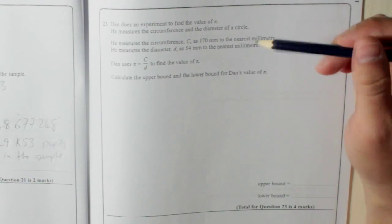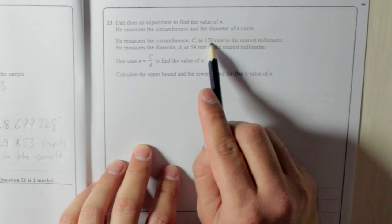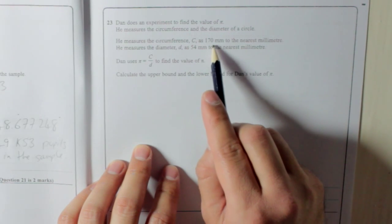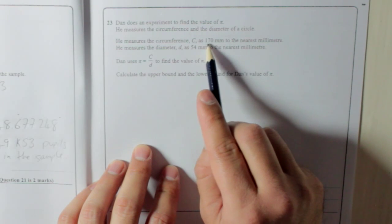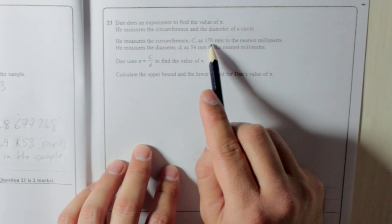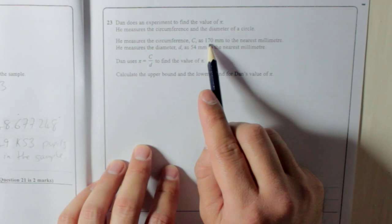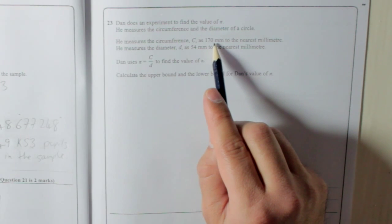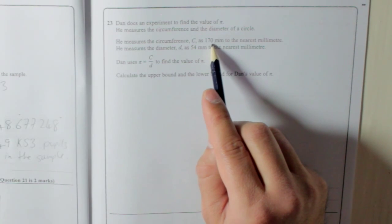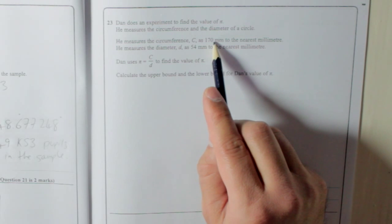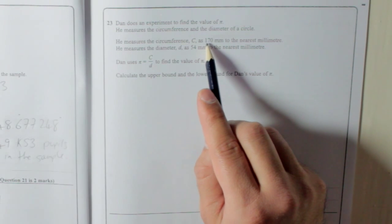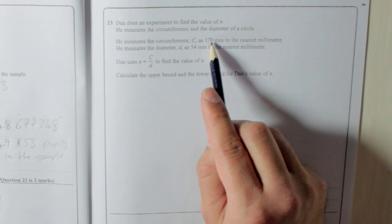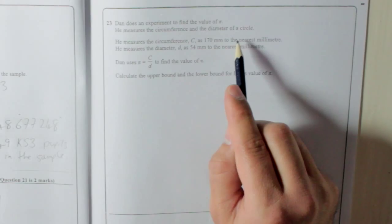So, let's first have a look at the rounding. Circumference C is 170 millimeters to the nearest millimeter. So it's already been rounded to the nearest millimeter, and that is 170. So that means it could be anywhere in between 170.5, because at 170.5 you would round up to 171. When you're talking about bounds, you can use 0.5. Even though 0.5 would go up, you can use it as a bound. So 170.5 is the biggest it could have been, and 169.5 is the smallest it could have been, because any less than 169.5 it would have got rounded to 169 millimeters to the nearest millimeter.